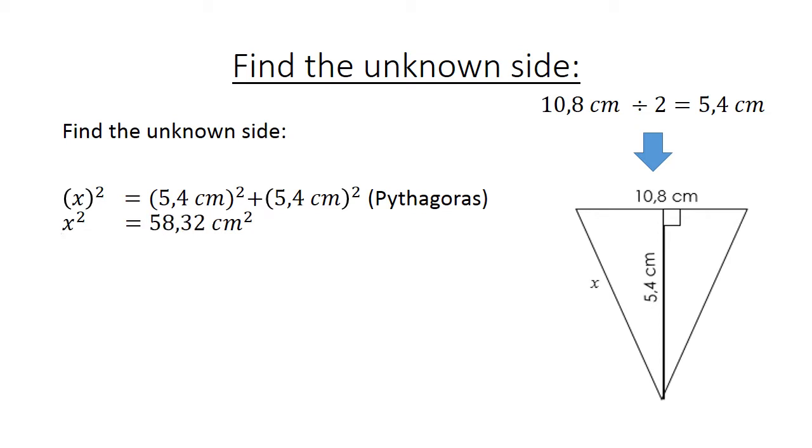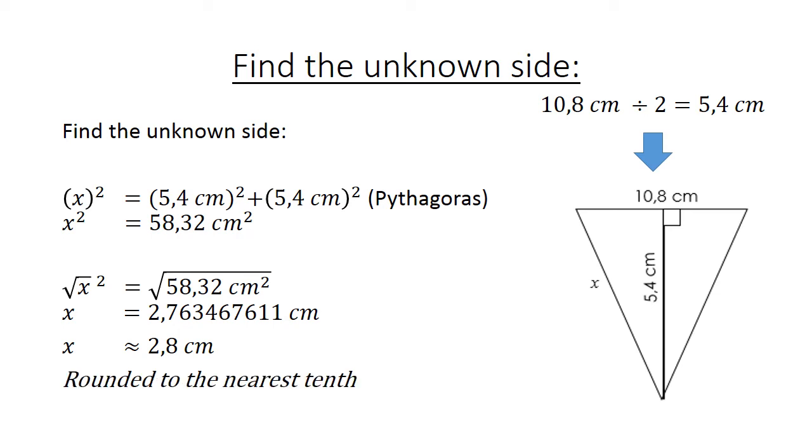X to the power of 2 equals now 58.32 cm squared. We are going to take the square root on both sides. X is now 7.63 cm. X is now rounded to 7.6 cm. To the nearest 1 decimal.